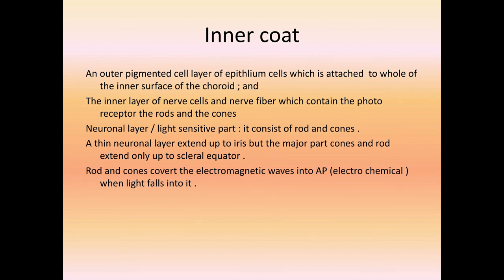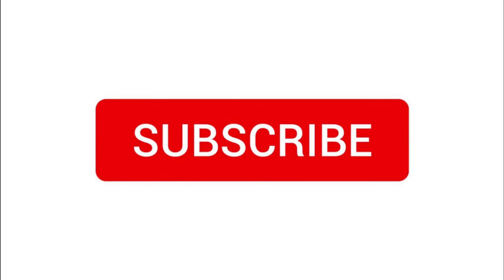The innermost layer consists of rods and cones, which are the main functional part. When light falls on the rods and cones, they become active and convert electromagnetic waves into action potential, that is, electrochemical signals. This is the basic structure and function of the eye, and in the next video we will study the retina in detail.